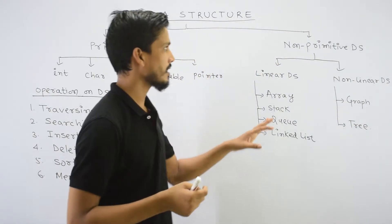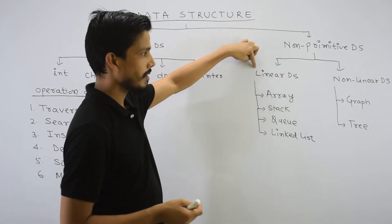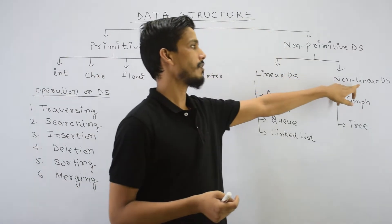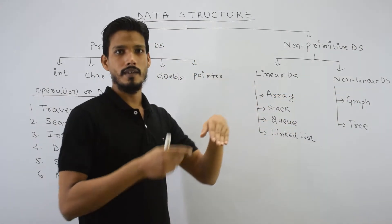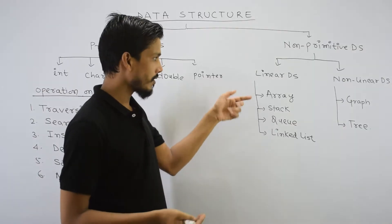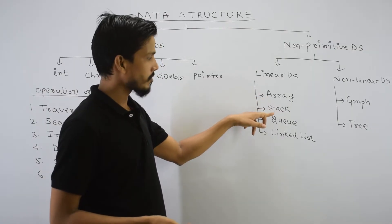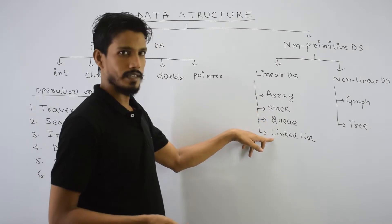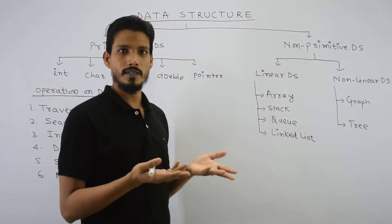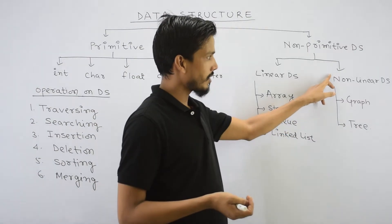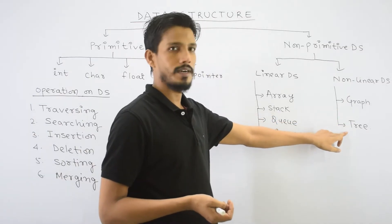The most important thing we need to discuss is non-primitive. Non-primitive has two types: linear data structure and non-linear data structure. What does linear mean? Sequentially, one after another. In total you have four: array, stack, queue, and linked list. The other is non-linear data structure — you have graph and tree.